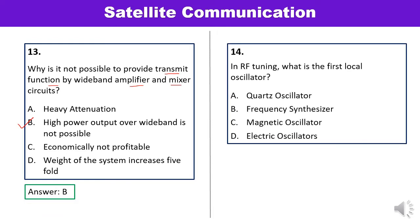Question 14: In RF tuning, what is the first local oscillator? In RF tuning, the first local oscillator is made adjustable and a frequency synthesizer generates a very stable signal at selected frequency increments. Answer B is correct.